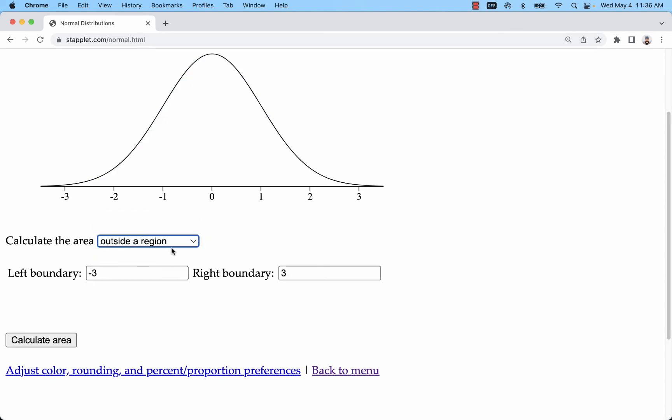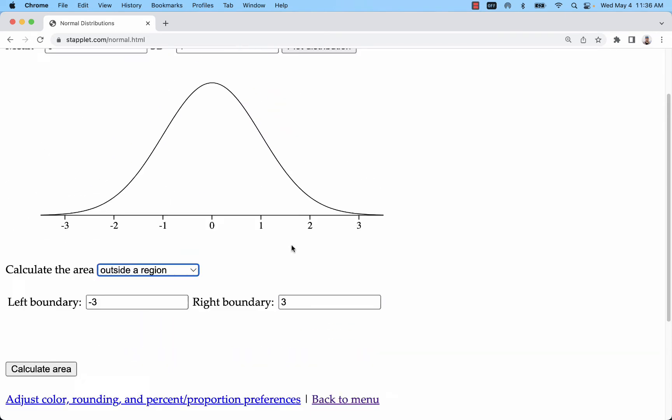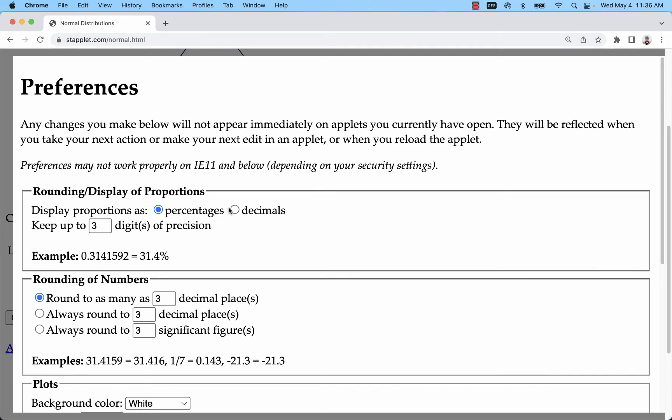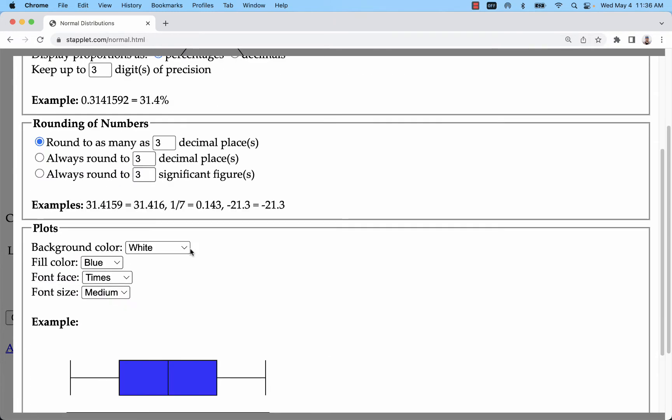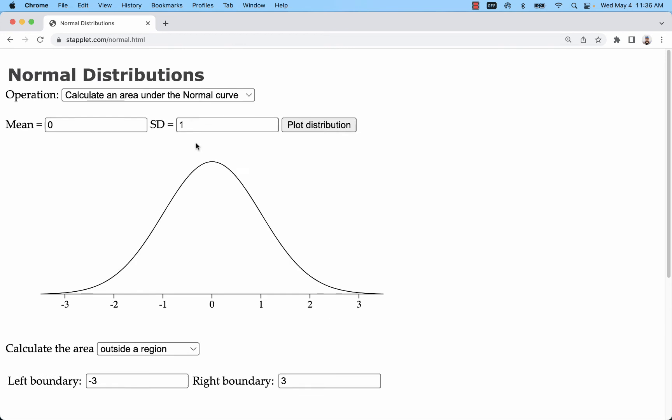So you can go left, right, outside, in between. Lots of different options there. You can also change to decimals. You can add accuracy. Don't forget about those preferences down below.